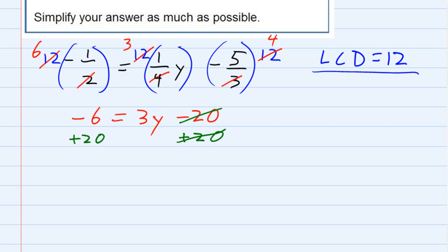So on the right-hand side, the 20s cancel. On the left-hand side, I have 14, negative six plus the 20. Bring down the three y. So our last step is just to get rid of the three. Getting rid of the three means I need to undo multiplication. So I undo multiplication with division. Divide by three on the right. Divide by three on the left. Those threes cancel.